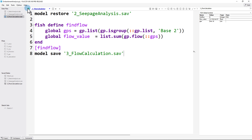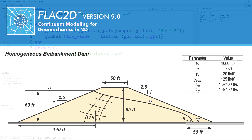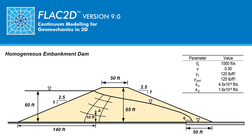Before closing this analysis, re-save the project by going to File and then Save Project. This completes the second step of our analysis: calculating the pore water pressures and water flow in the embankment due to the reservoir. In the next video, the final step in this three-part tutorial will be completed, updating the soil densities and recalculating the effective stresses in the model.